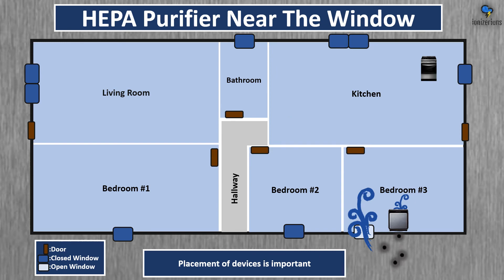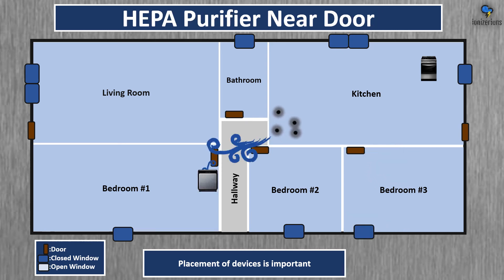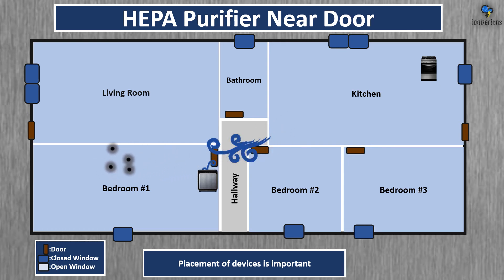When you put an air purifier near the window, even if you have good insulation, it can draw outdoor air pollution particles or gases into your home. If possible, try not to place an air purifier near the window — it's not a huge deal, but it's preferred. If you place an air purifier near the door, it will draw air from other rooms or the hallway into your room — just something to be aware of.